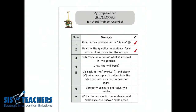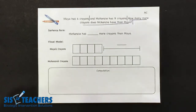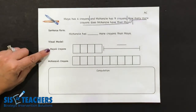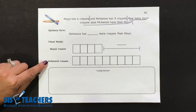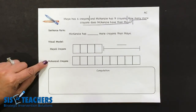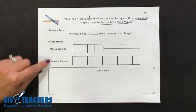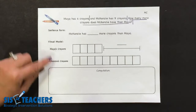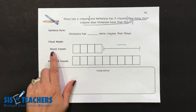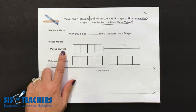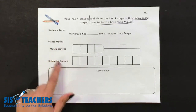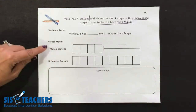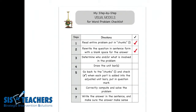The next part says determine the who or the what. Let's go back and take a look — we've already written in that this bar is representing Maya's crayons and this bar is representing Mackenzie's crayons. Down the line we could leave the character's name blank and let kids begin to learn throughout the school year that they can put in the who and what on their own. Let's go back to the checklist and check that off.